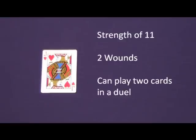A Jack has a base strength of eleven, and can take two wounds before being eliminated. Instead of playing only one card during the duel, the Jack may play two cards.